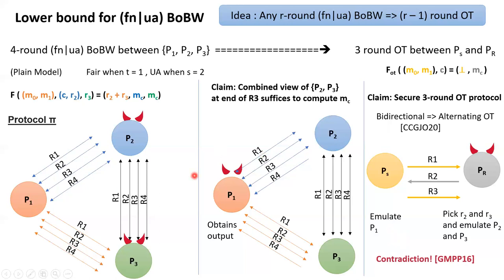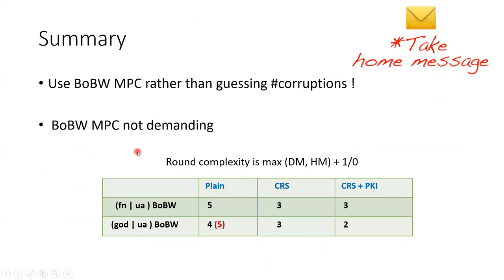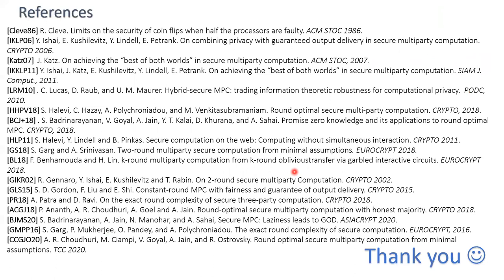To summarize, the main takeaway is that best of both worlds MPC protocols are best fit for situations where you do not know in advance how many parties the adversary is going to corrupt. In terms of round complexity, our results show that best of both worlds MPC is actually not at all demanding — the exact round complexity of both classes turned out to be either the same or at most one more than the maximum of the needs in the honest majority and dishonest majority settings. With this, I conclude my talk. Thank you very much for listening.